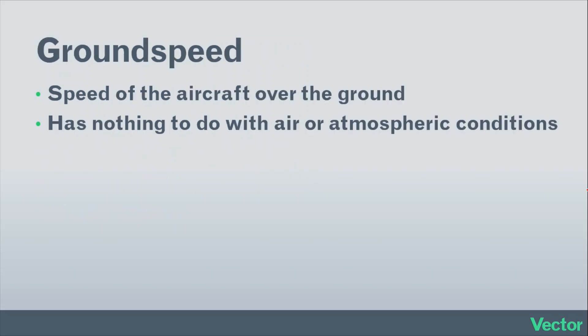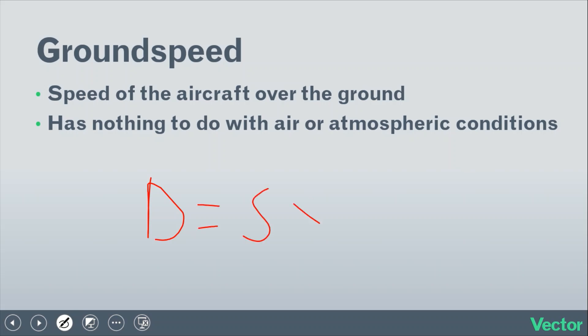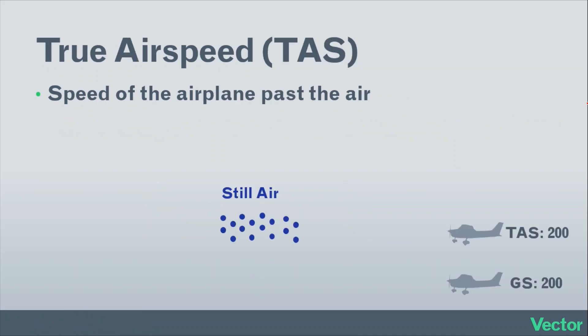Ground speed is just the speed of the airplane moving over the ground, or the speed of the airplane in relation to the ground. It has nothing to do with altitude, temperature, density, pressure, or any atmospheric conditions. So if we want to calculate how long it will take us to get somewhere using distance equals speed times time, we need to use ground speed.